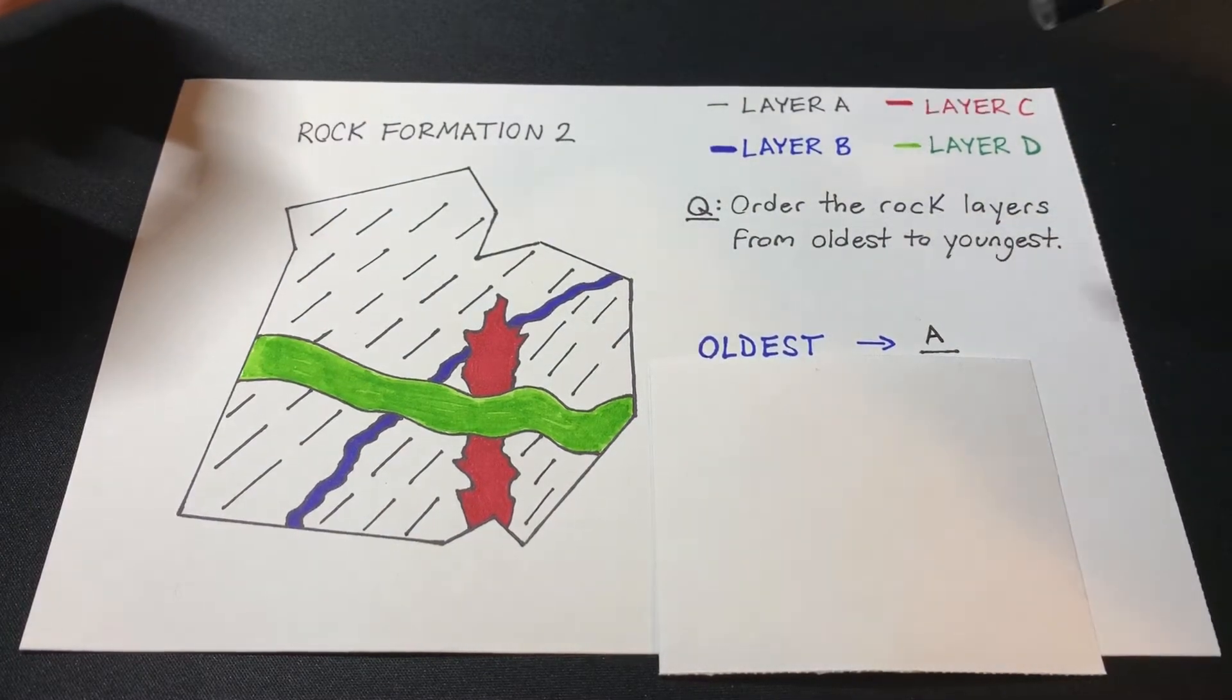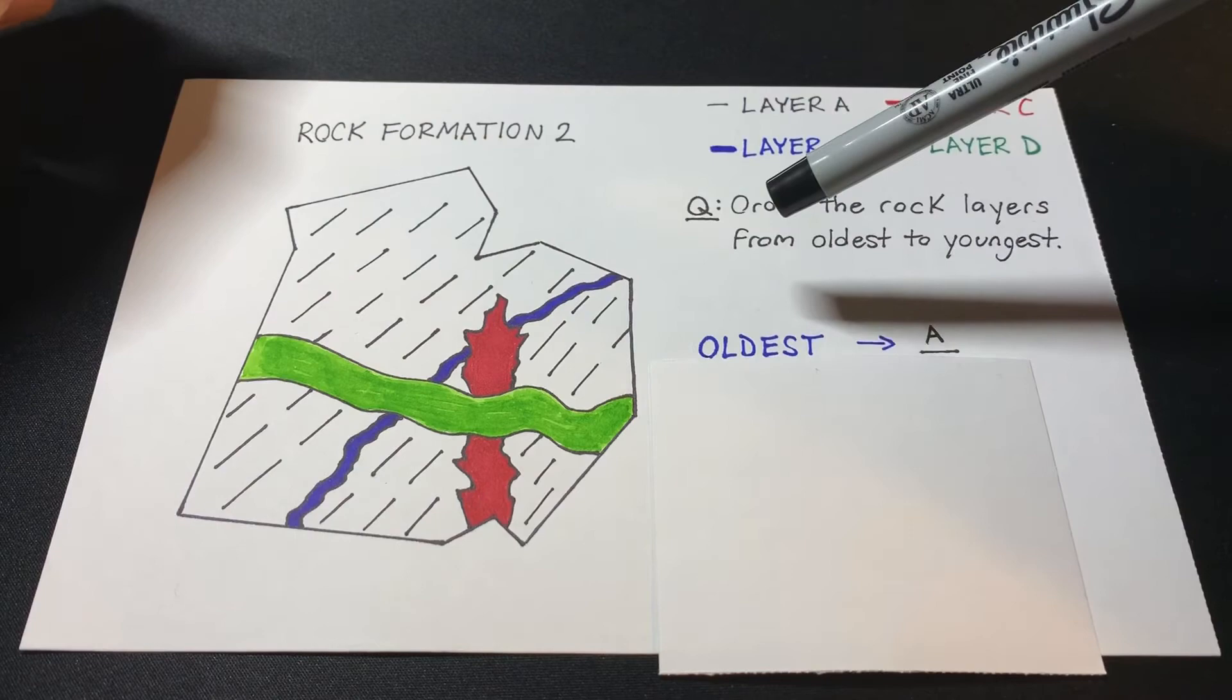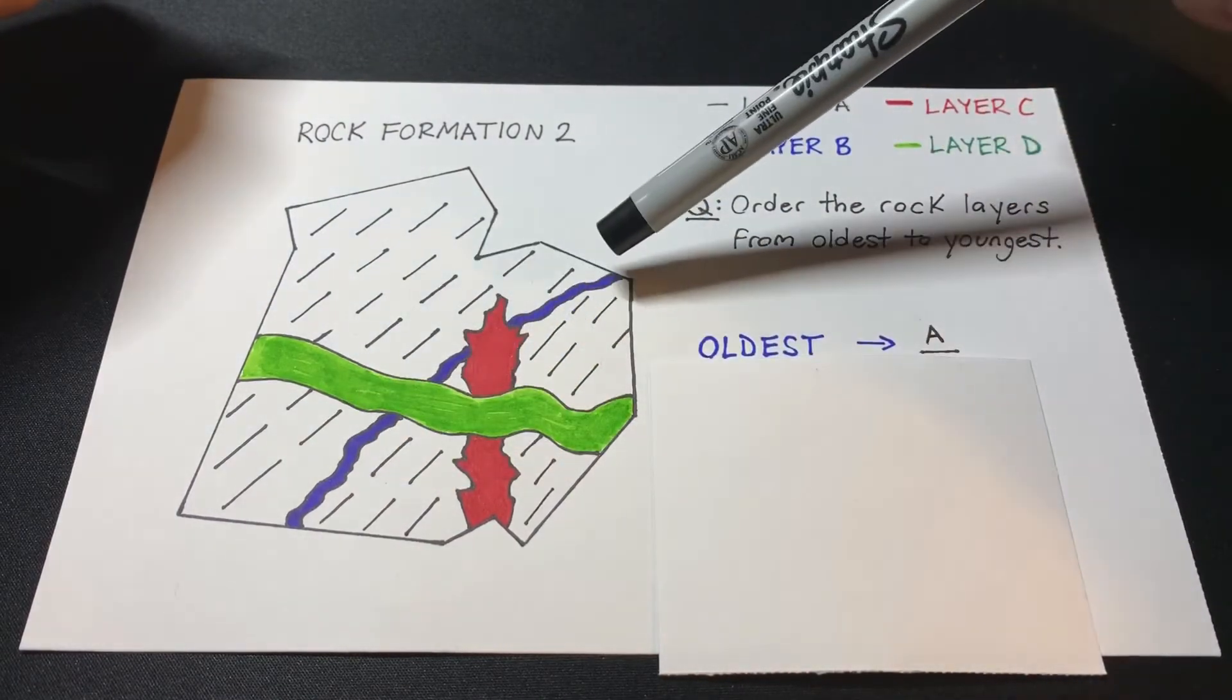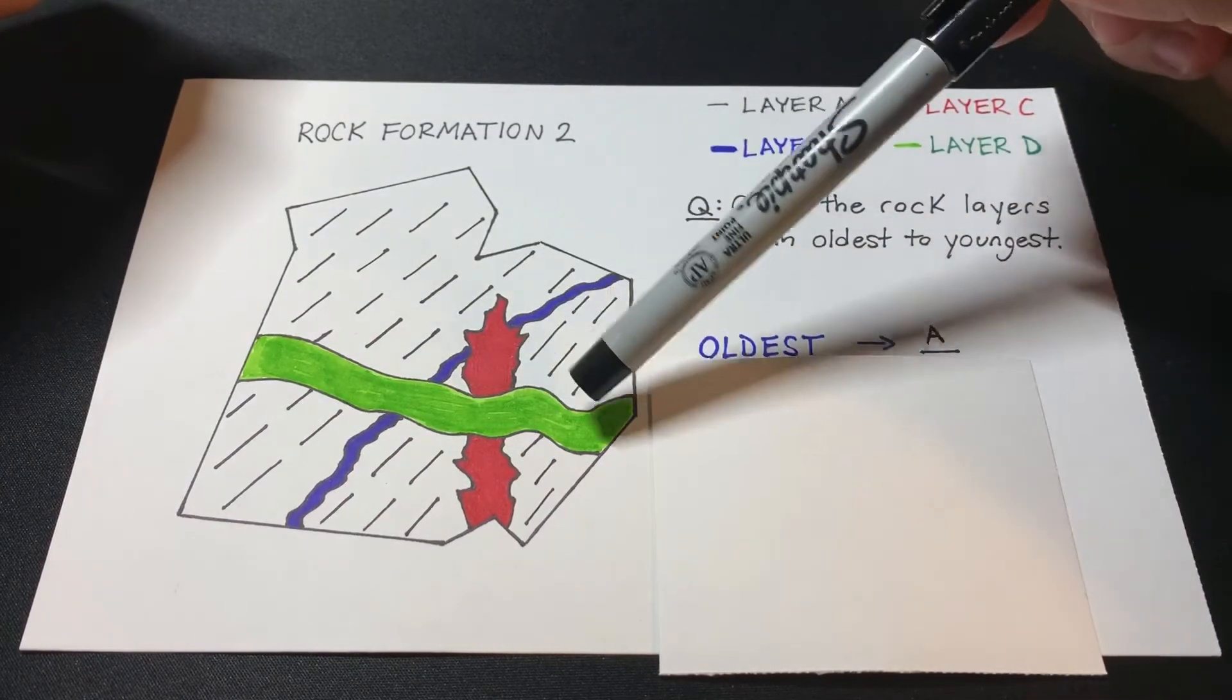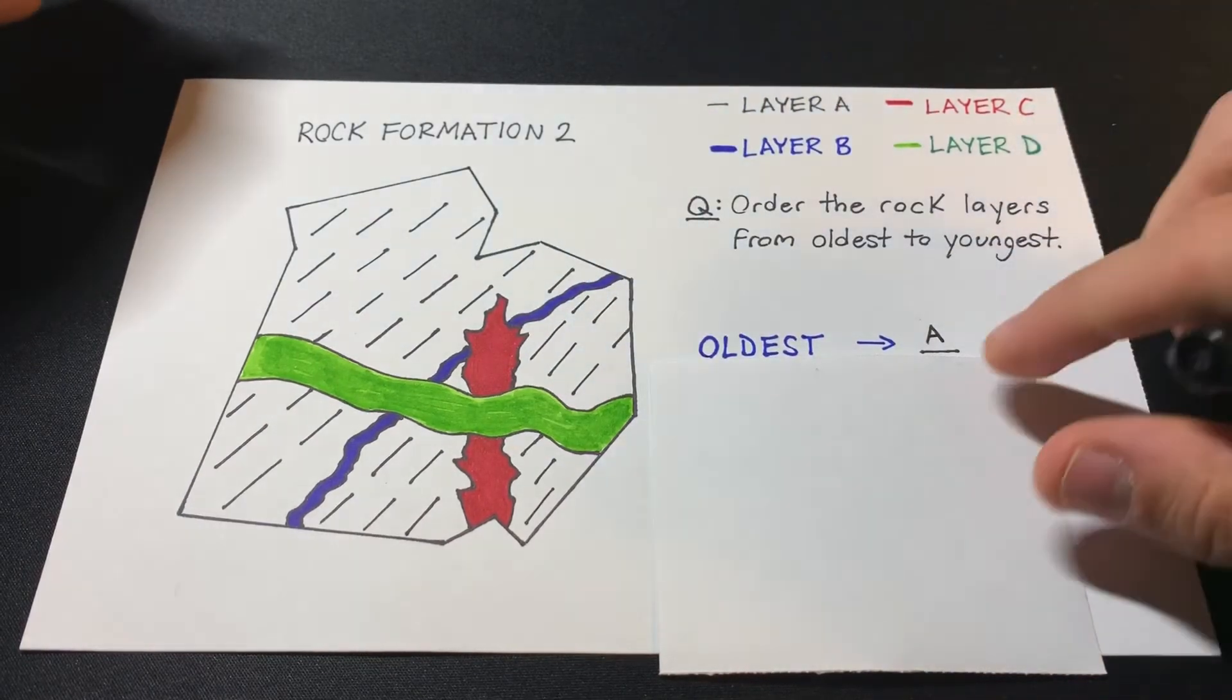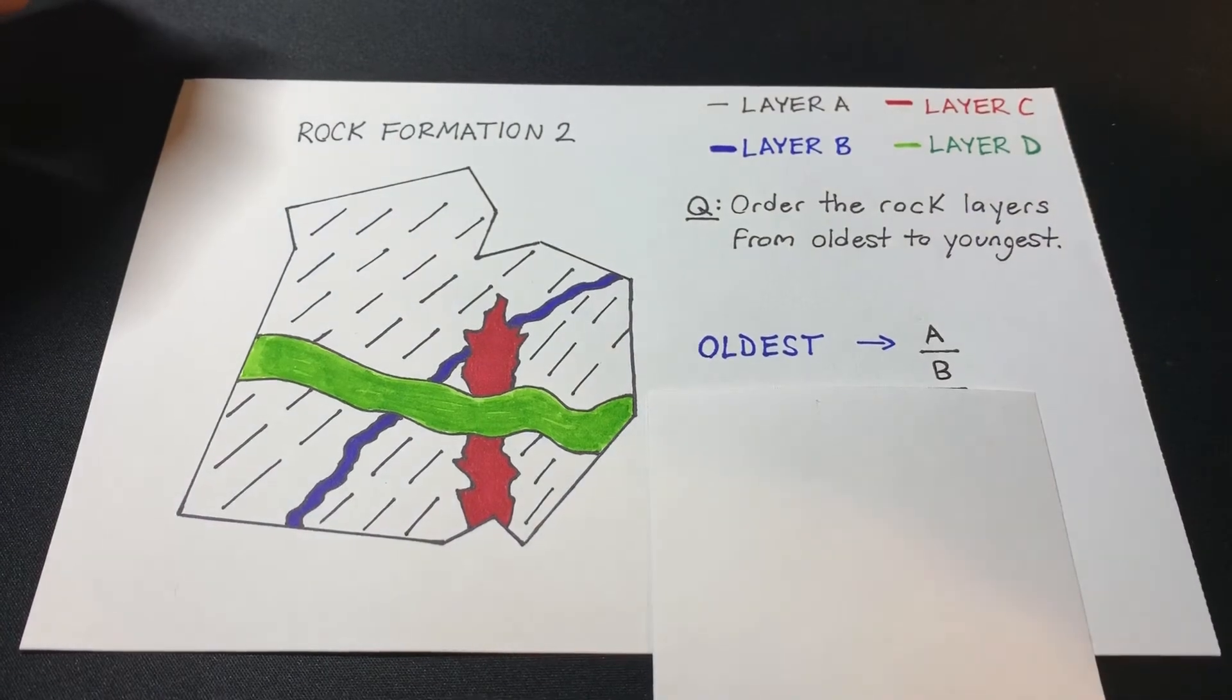So the second oldest is going to be the one that is cutting across rock layer A, but not the other two, right? So that would be the blue rock layer because it's cutting across A in the background, but it's being overlapped still by the green and the red rock layers. So that would make rock layer B the second oldest.